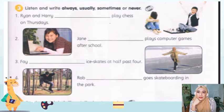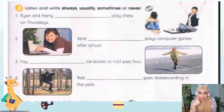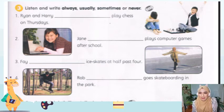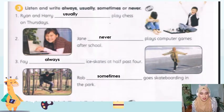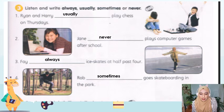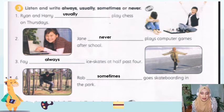We have just finished listening to the recording twice. Did you get the answers? Now I'm going to reveal the correct answers. Please make sure you have finished your work before viewing this. Number one: Ryan and Harry usually play chess on Thursday. Number two: Jane never plays computer games after school — she always does her homework. Number three: Faye always ice skates at half past four. Number four: Rob sometimes goes skateboarding in the park. Did you get all correct?